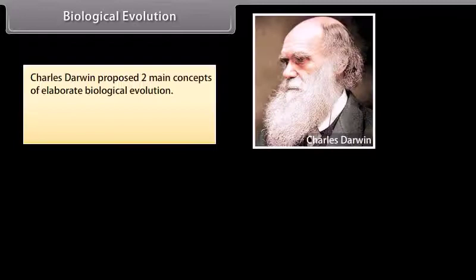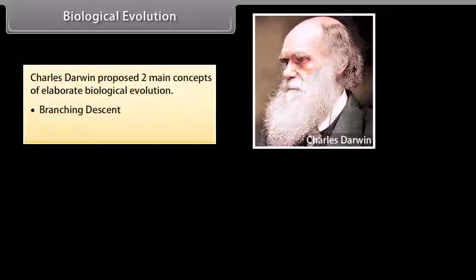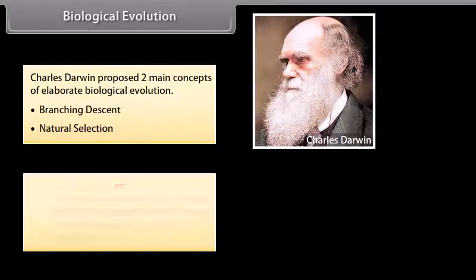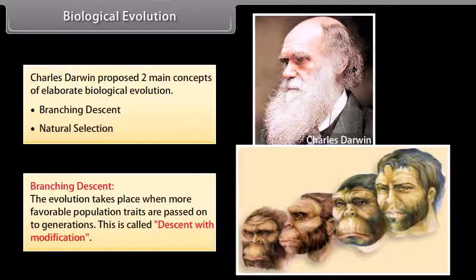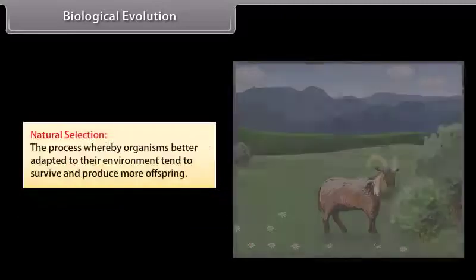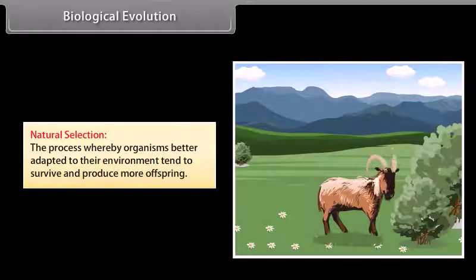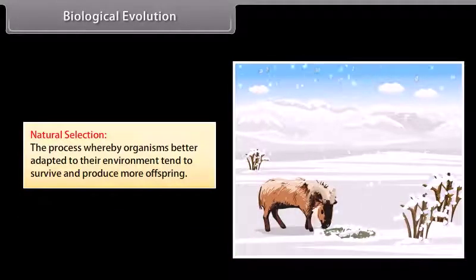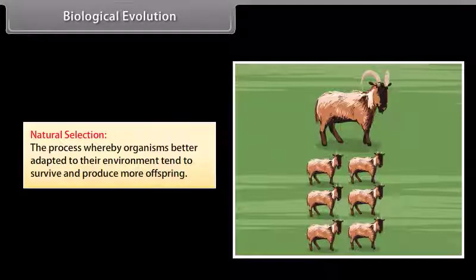Biological evolution: Charles Darwin proposed two main concepts of biological evolution. First, branching descent — evolution takes place when more favorable population traits are passed on to generations, called descent with modification. Second, natural selection — the process whereby organisms better adapted to their environment tend to survive and produce more offspring.